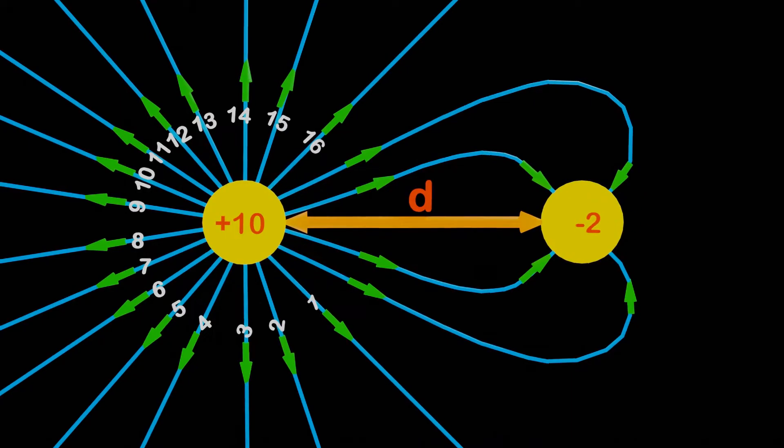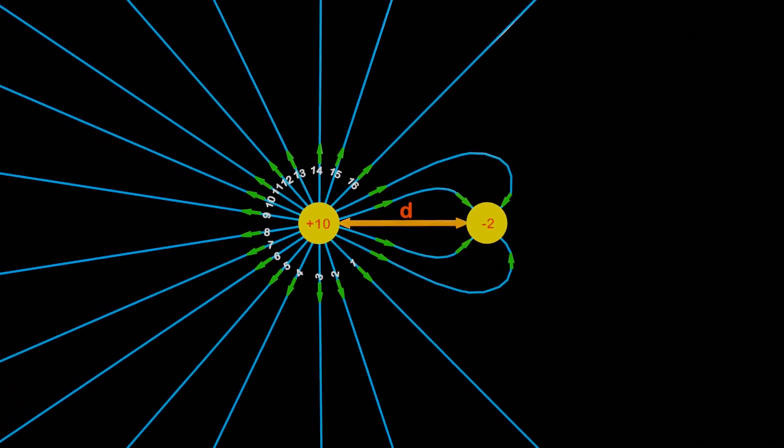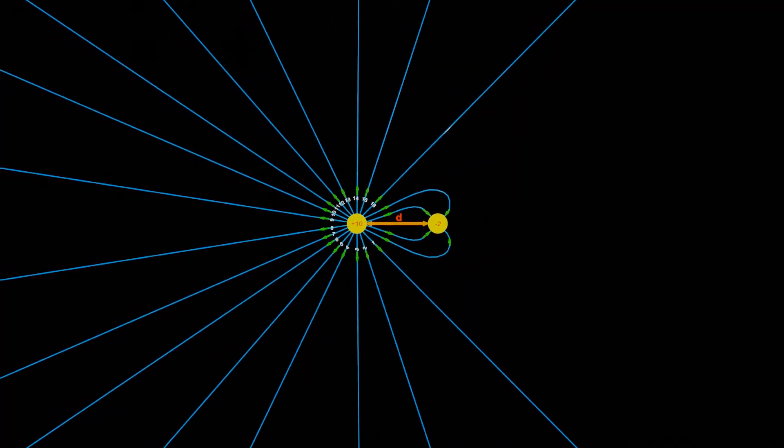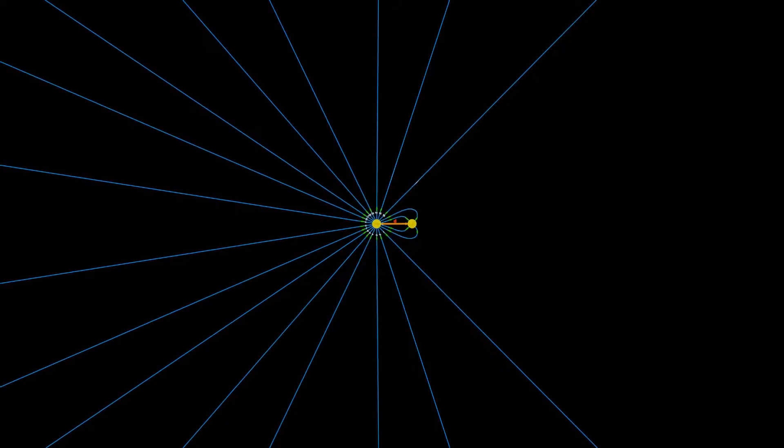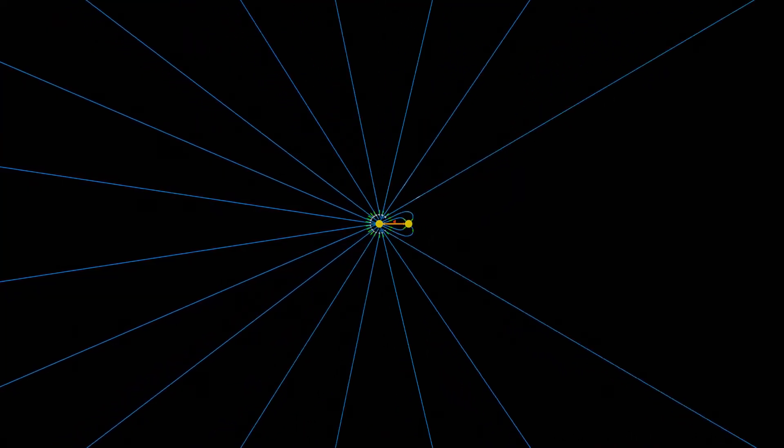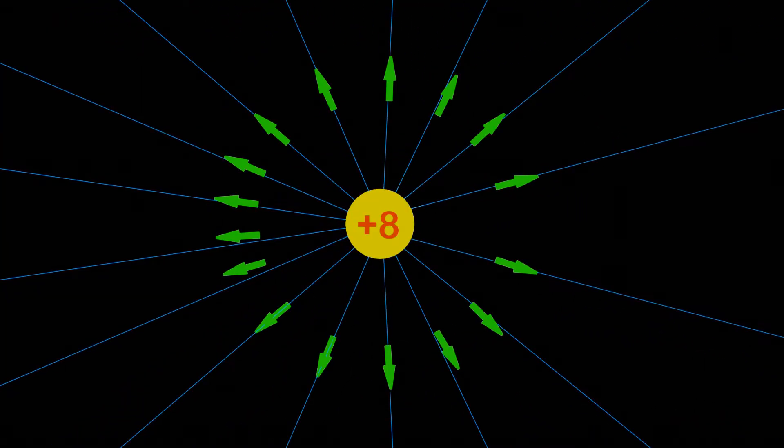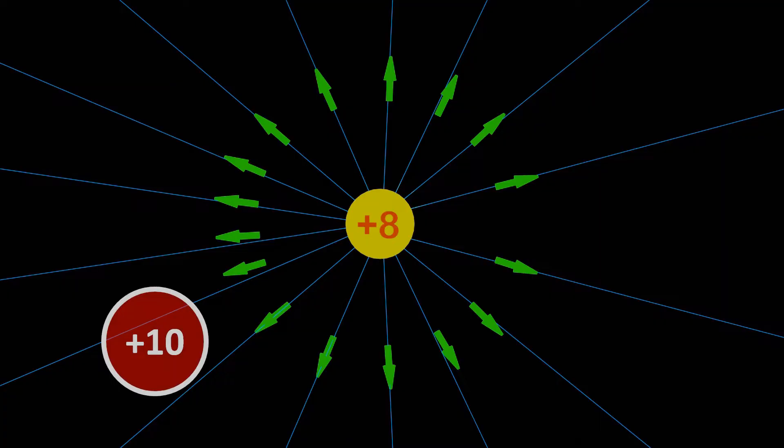Now, if we zoom out and observe the two charges from a distance, we see that the electric field appears to be radial. We can see 16 electric field lines that resemble the outward radial pattern of positive 8 charge, which represents the approximate electric field of the positive charge of magnitude 10 and negative charge of magnitude 2.